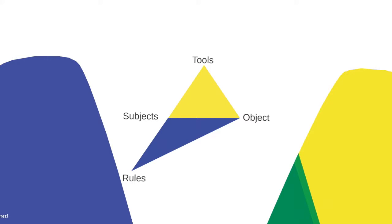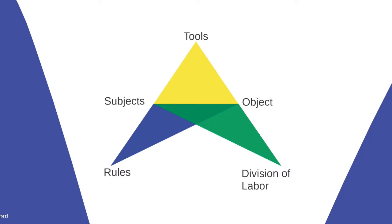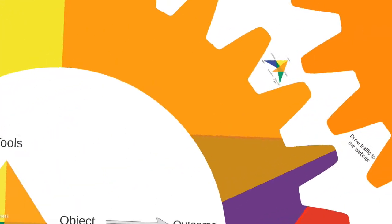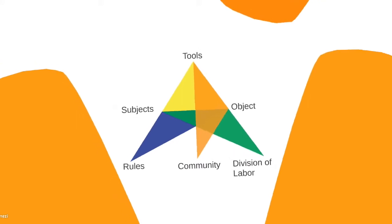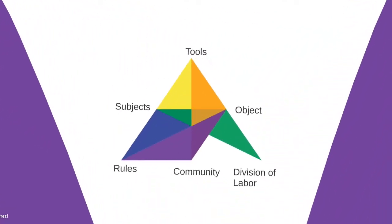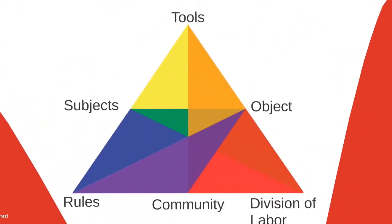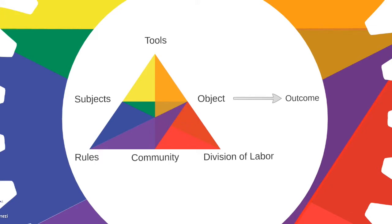In the 1980s, the Scandinavians incorporated additional components — rules, division of labor, and community — expanding the model to six components. These components interconnect: subjects with rules, subjects with division of labor, subjects with community, community with tools, community with rules, and community with division of labor — all directed toward the object. Once all six components of the activity system are working together, the result is the desired outcome.